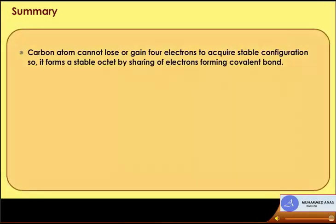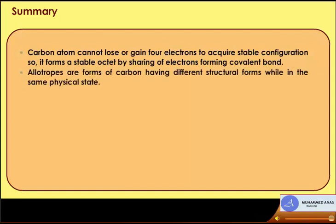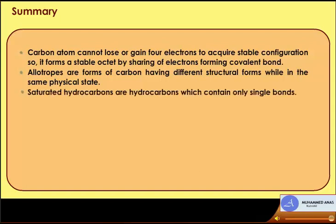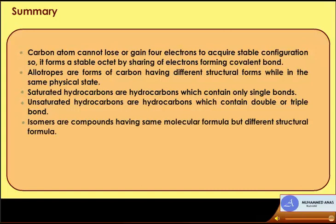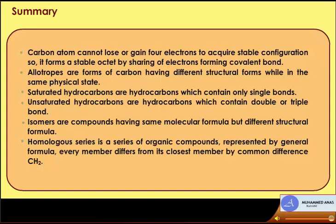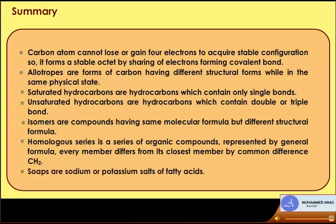Summary: carbon cannot lose or gain 4 electrons to acquire a stable configuration, so it forms a stable octet by sharing electrons through covalent bonds. Allotropes are forms of carbon having different structural forms in the same physical state. Saturated hydrocarbons contain only single bonds; unsaturated hydrocarbons contain double or triple bonds. Isomers have the same molecular formula but different structural formulae. Homologous series is a series of organic compounds represented by a general formula, where consecutive members differ by CH2. Soaps are sodium or potassium salts of fatty acids.